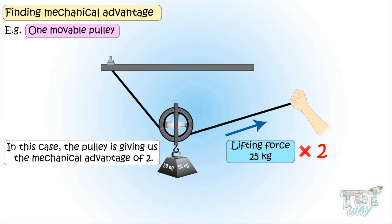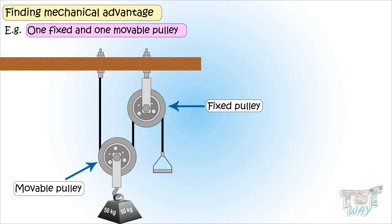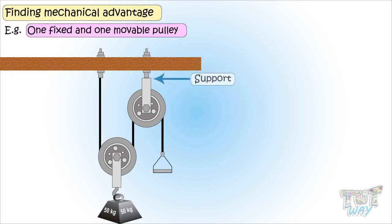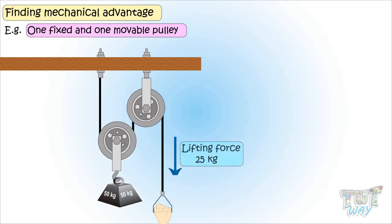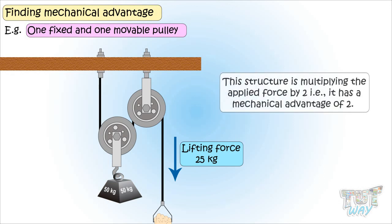Next example. Here we have one fixed and one movable pulley. That is, a block and tackle system. Here, one of the pulleys is attached or fixed to some support. And one pulley is attached to the load. In this case, it takes 25 kg effort to lift 50 kg weight. So, this means the structure is multiplying the applied force by 2. That is, it has mechanical advantage of 2.